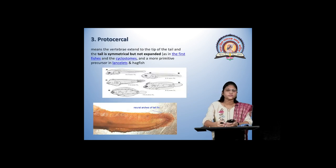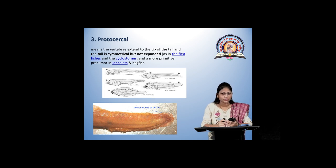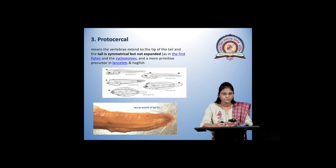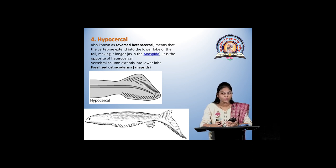Next is the protocercal tail, in which the vertebrae extend to the tip but are not expanded, so we cannot distinguish the upper lobe and lower lobe. This was seen in fishes that are now fossilized, like cyclostomes, lancelets, and hagfish. Next is the hypocercal, which is the reversal of the heterocercal. In the hypocercal, the vertebrae extend at the lower lobe, so the lower lobe is seen as longer than the upper lobe. It was seen in fossilized ostracoderms.